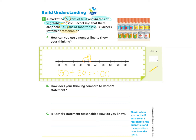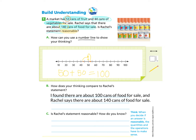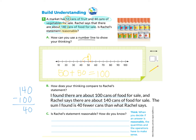Now let's look at Part B: how does your thinking compare to Rachel's statement? We can explain by saying I found that there were 100 cans of food for sale, and Rachel says there are about 140 cans. Her guess was 140, and we found 100 cans. The difference between 140 and 100 is 40, so the sum I found is 40 fewer cans than what Rachel says.